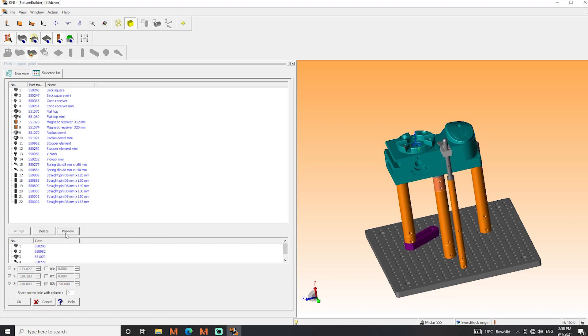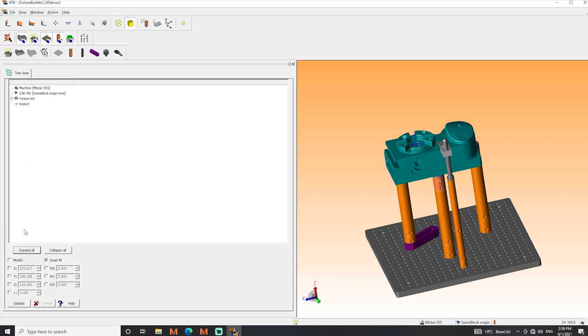What we see is the complete fixture as made up by the software. We click OK and can see the complete setup of each column in our tree diagram. All part numbers are shown. Of course we need to save our file and give it a name.